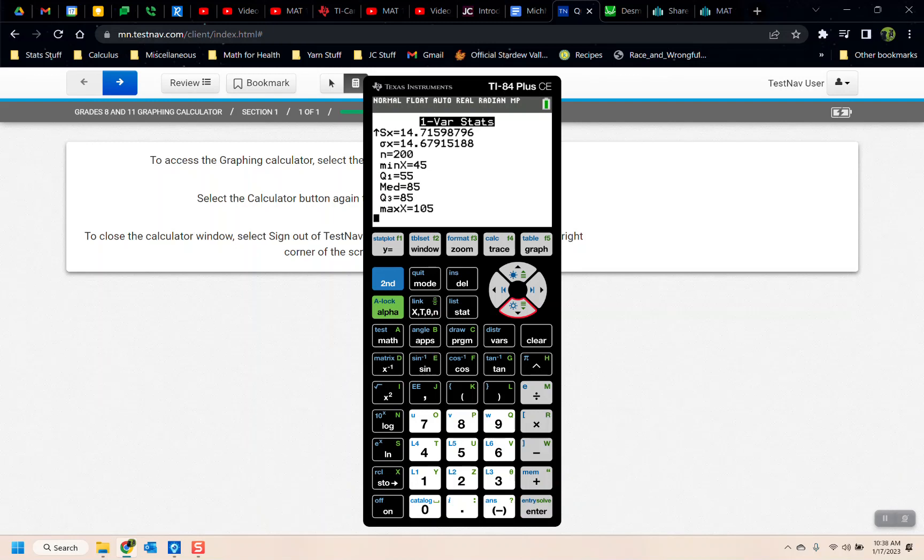Now the bad part is that the variance is not found. So to find the variance, you're actually going to have to take the 14.71598, so 14.716, and you square it to get the variance. So you'll have to do that yourself because the TI-84 does not give the variance on its own.